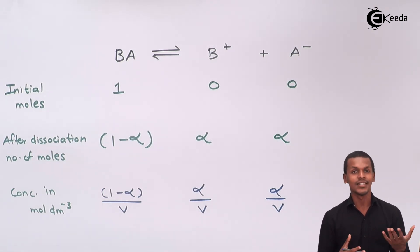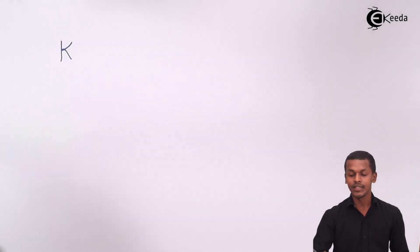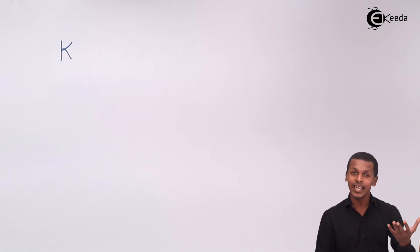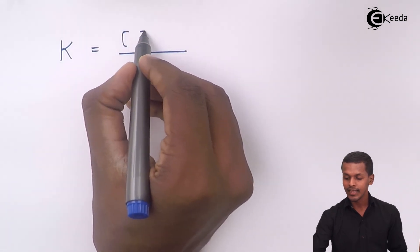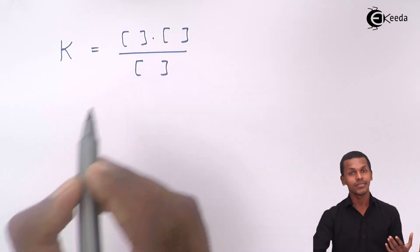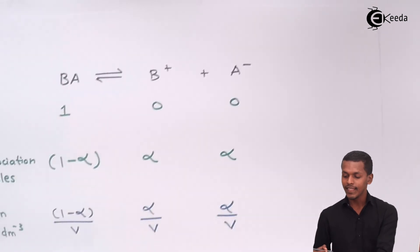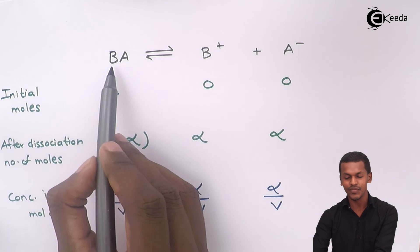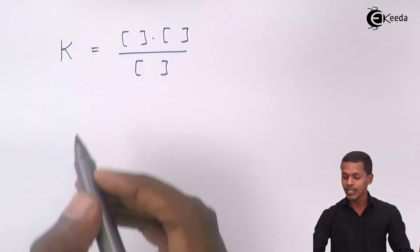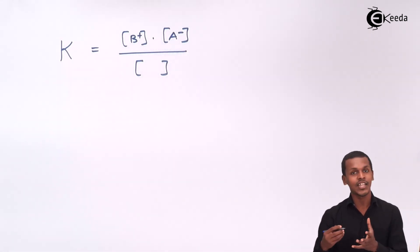Now we apply the Law of Mass Action. Since we are dealing with a weak electrolyte, the equilibrium constant K here is called the dissociation constant. The dissociation constant is the ratio of the product of concentrations of the produced ions to the concentration of the reactant electrolyte. So K = [B⁺][A⁻] / [BA], where the products are B⁺ and A⁻ and the reactant is BA.